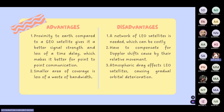Lastly, atmospheric drag affects LEO satellites, causing gradual orbital deterioration. Next, I will pass to Shakira.